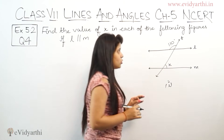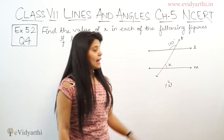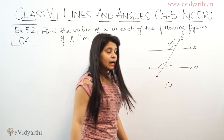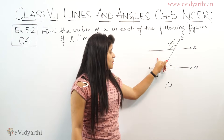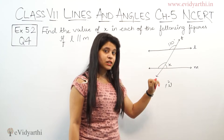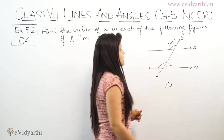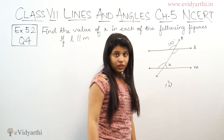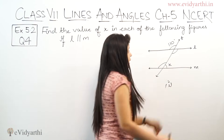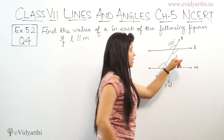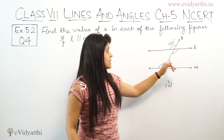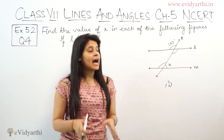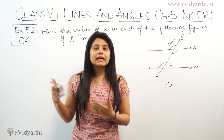Here we have angle 110 degrees given. Now this angle and this angle are corresponding. This is also 110. Now this angle is known. And if I have this angle, then I can find x with a linear pair. So this is also one way. These are vertical opposite angles. So this angle will come. Now x and this angle are on the same side of the transversal, which means it will be 180 degrees. Again, I can find x. So this means that in questions, you can find many different properties.